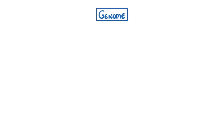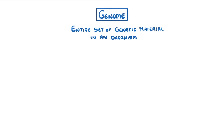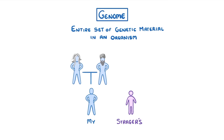Lastly, we have the genome, which is just a fancy term to describe the entire set of genetic material in an organism. For example, my genome would probably be quite different to a stranger's, but it would be more similar to my parents' genomes. And if I had an identical twin, then we'd have the same genome.